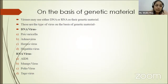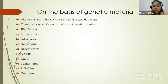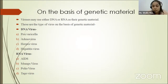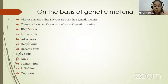The third classification is on the basis of genetic material. Viruses may use either DNA or RNA as their genetic material. Examples of DNA viruses include pox virus, varicella, adenovirus, herpes virus, and hepatitis virus. Examples of RNA viruses include AIDS, mumps virus, poliovirus, and togavirus.